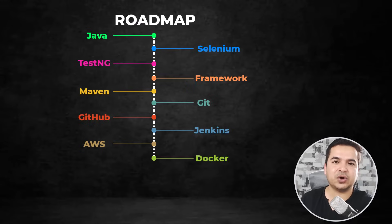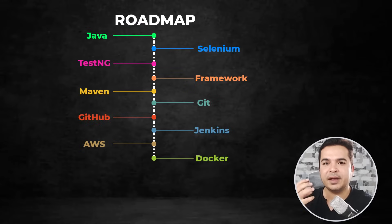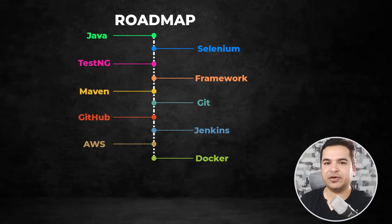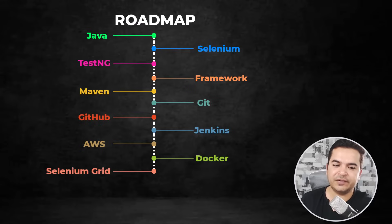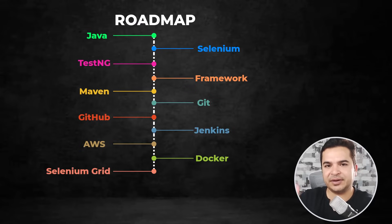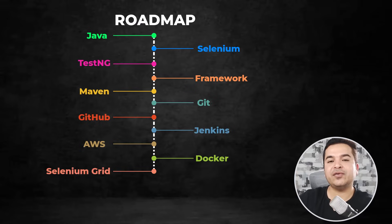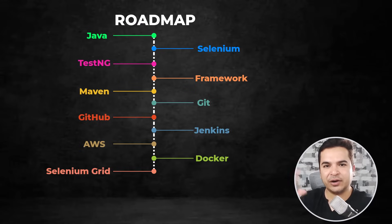We will also talk about Docker — what is Docker, how to create a Docker Compose file, how to run Selenium Grid on Docker — because in real time you will be using Docker a lot for microservices. For Selenium Grid specifically, we will see how to run your Selenium tests on different testing cloud platforms like LambdaTest, and also how to set up your own Selenium Grid locally and on the cloud.